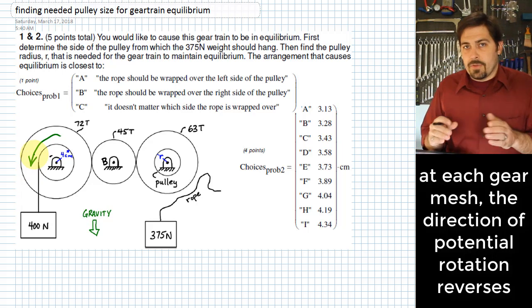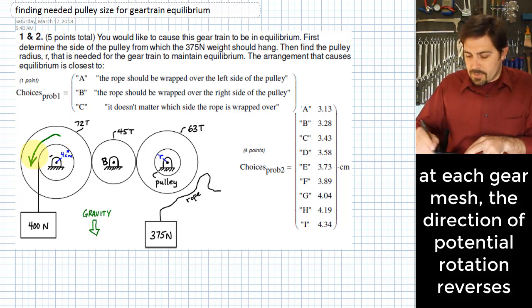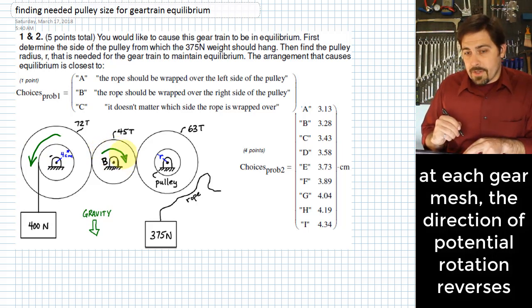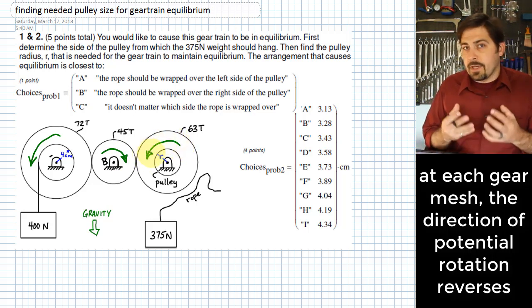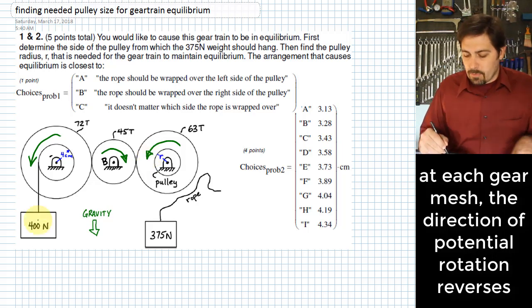We know that each time there's a mate between gears, a mesh between gears, it reverses the direction. So that means we would see clockwise on the next gear over here, and then it would want to go counterclockwise again. This is if the only influence on the system was the 400N weight over on the left side.